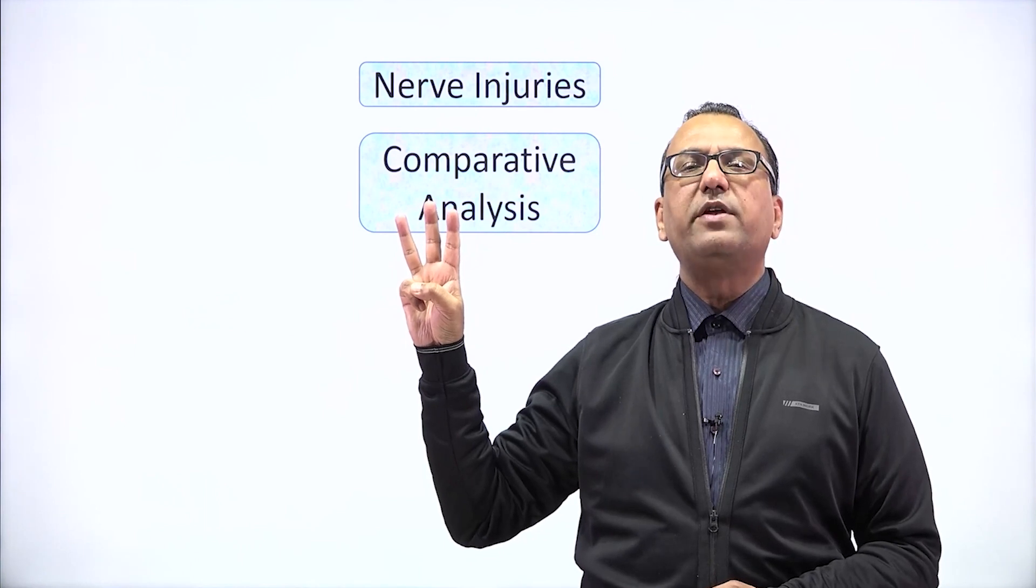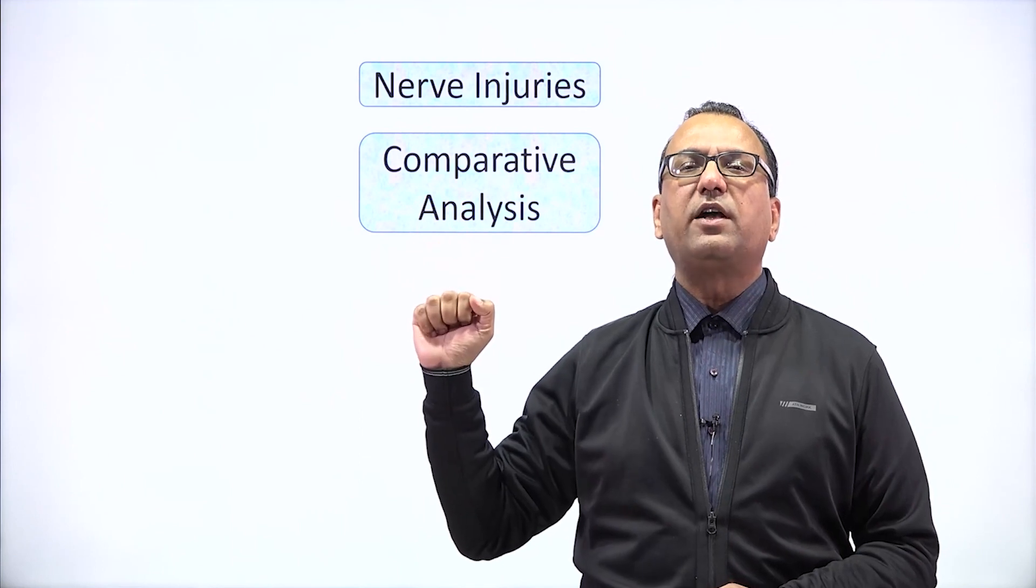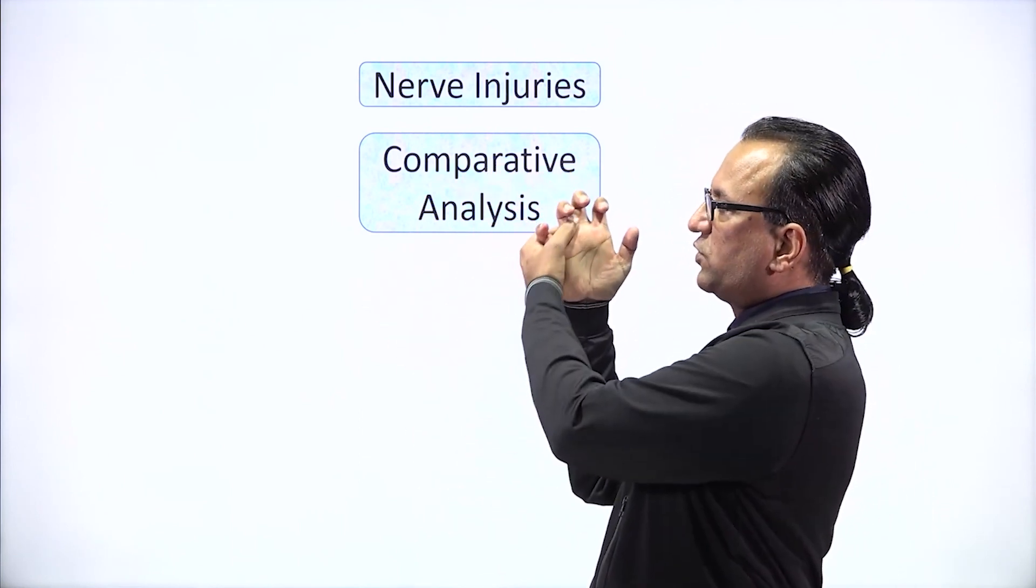If it is a case of median nerve injury, the patient will present with hand of benediction, whereas in case of ulnar nerve injury, there'll be claw hand deformity, especially affecting the medial two fingers.